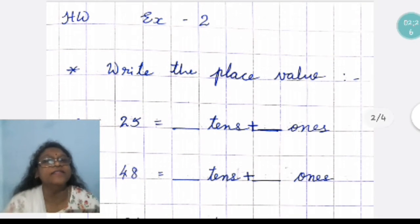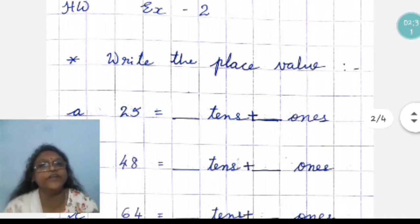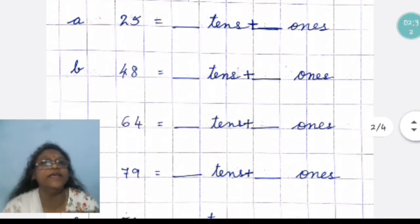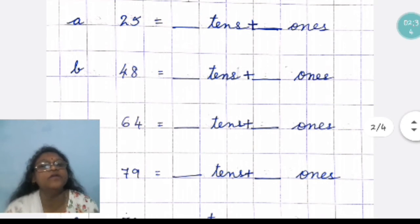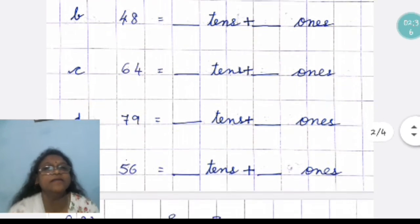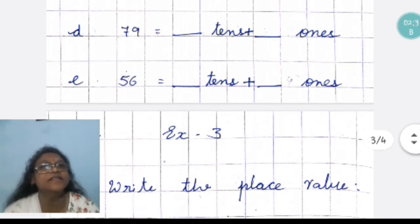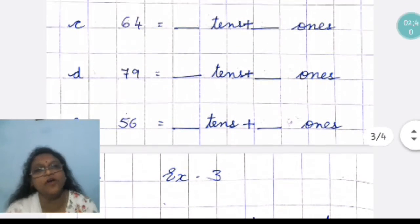Now, second exercise. In this, you have to write the place value of 25, 48, 64, 79 and 56. This, you have to do by yourself.